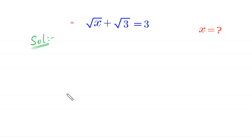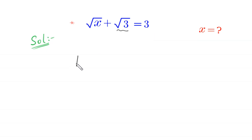Hello everyone, welcome. We are going to solve this radical equation: root x plus root 3 is equal to 3. Our job is to find all possible values of x. We move root 3 to the right-hand side, so the equation becomes root x is equal to 3 minus root 3.